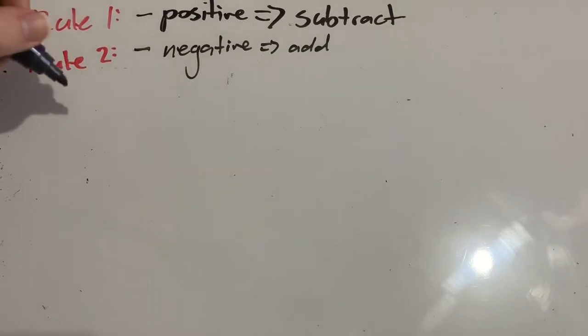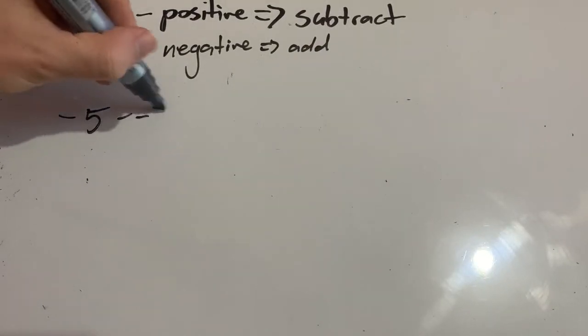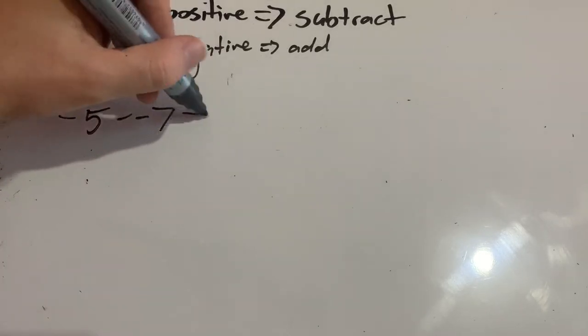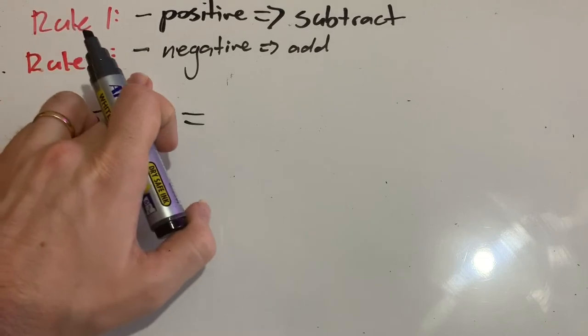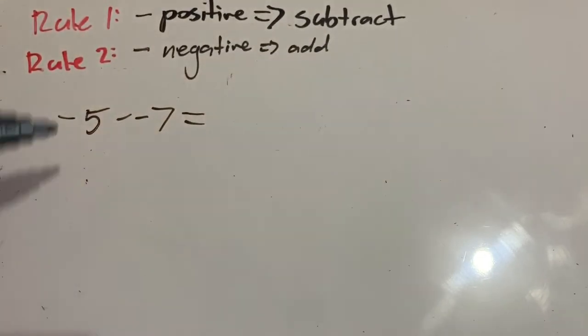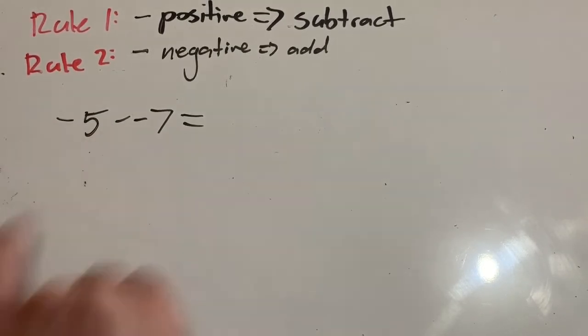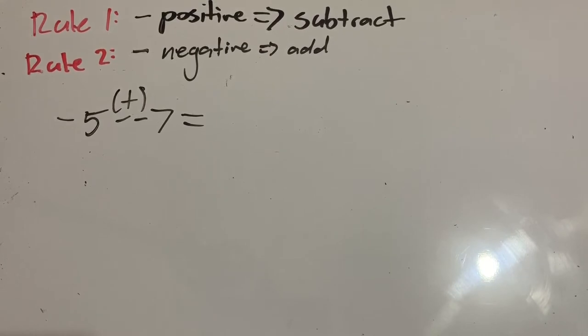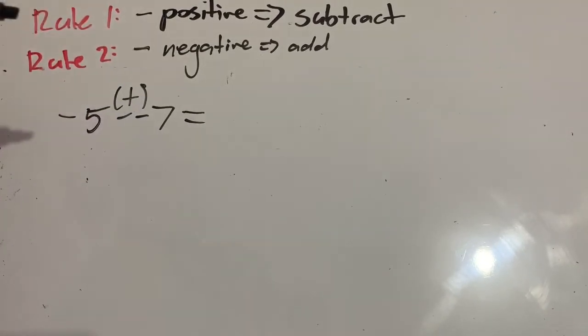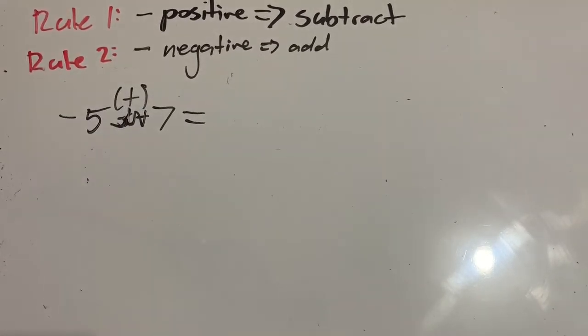So let's try this problem. Negative 5 minus negative 7. Now I need to check my rules. So we're using rule 2 here. So when we are subtracting a negative number, we're actually adding. So I'm seeing these two subtract signs next to each other. So that is actually going to be, I'm actually going to add these numbers together. So I'm actually adding negative 5 and 7. So I've dealt with these. I don't actually need to worry about those anymore. So I'm adding 7.